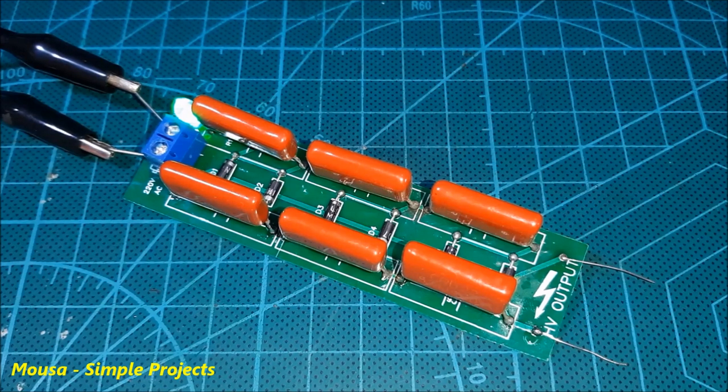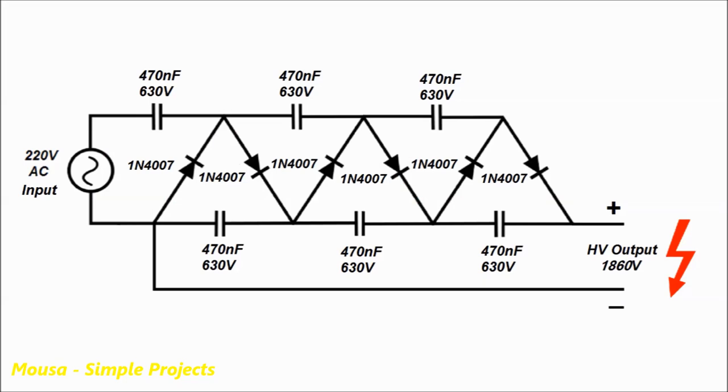This is the circuit of my voltage multiplier. This circuit also called Cockroft-Walton, it consists of six diodes and six capacitors.